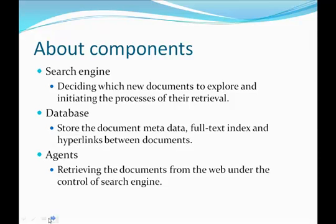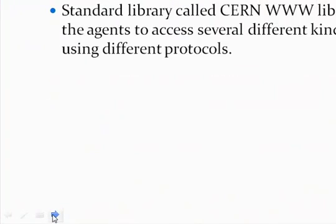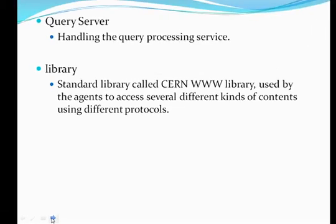Agents are responsible for retrieving documents from the web under the control of the search engine — the agent is a tool running under the search engine. The query server handles the query processing service. The library is not separate software; it is a standard library called the CERN WWW Library, used by agents to access different kinds of content using different protocols such as HTTP, FTP, and image document protocols.